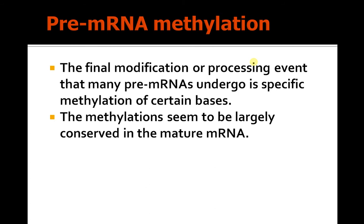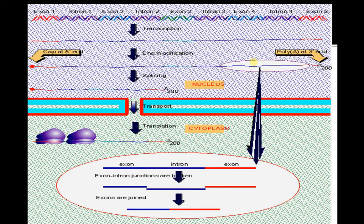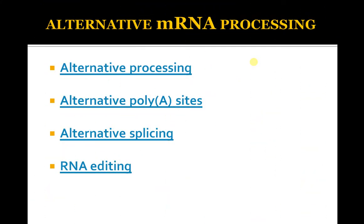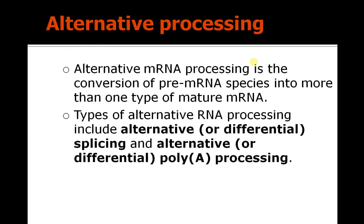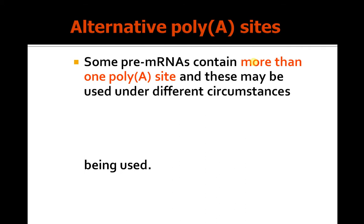Pre-mRNA methylation: the final modification in processing is that many pre-mRNAs undergo specific methylation of certain bases, and this methylation is largely conserved in the mature mRNA. Alternative mRNA processing is where pre-mRNA is spliced into more than one type of mature mRNA, including alternative differential splicing and alternative differential poly-A processing.